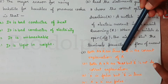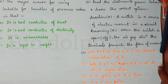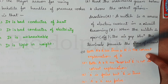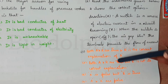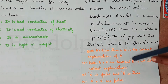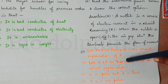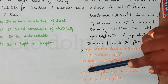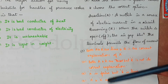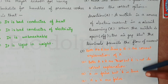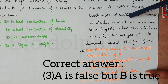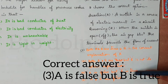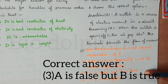Looking at the options: both A and R are true and R is the correct explanation of A — that is not the case. A is actually false. R is true — when the switch is open, the air gap does prevent current flow. So the correct answer is option 3: A is false but R is true.